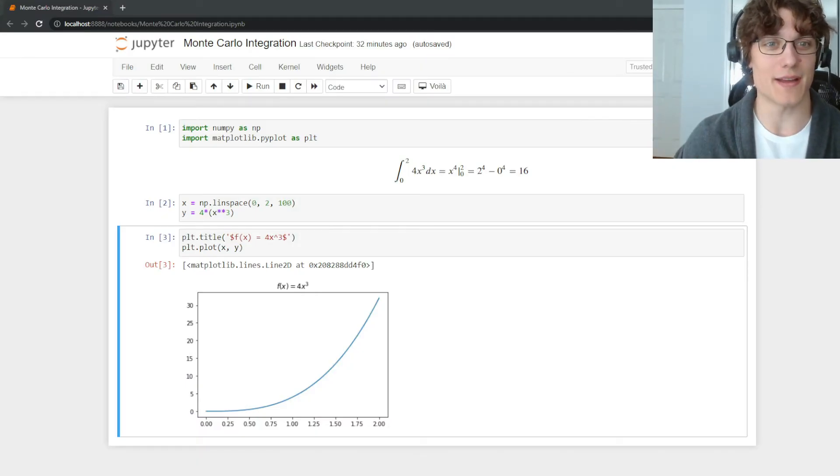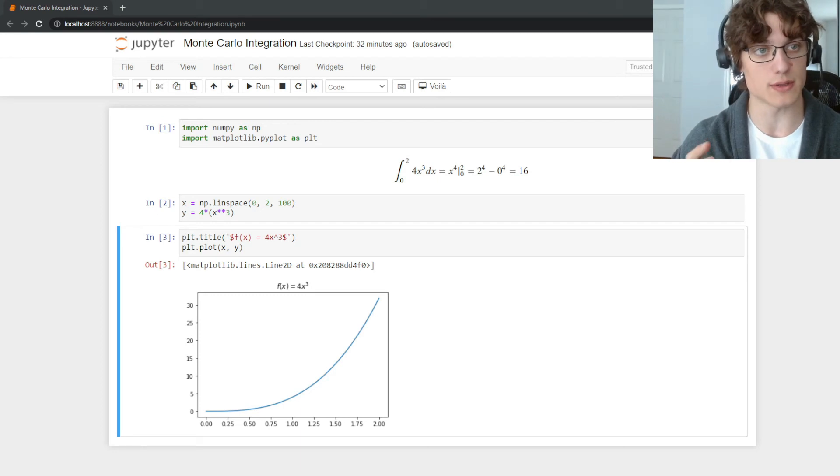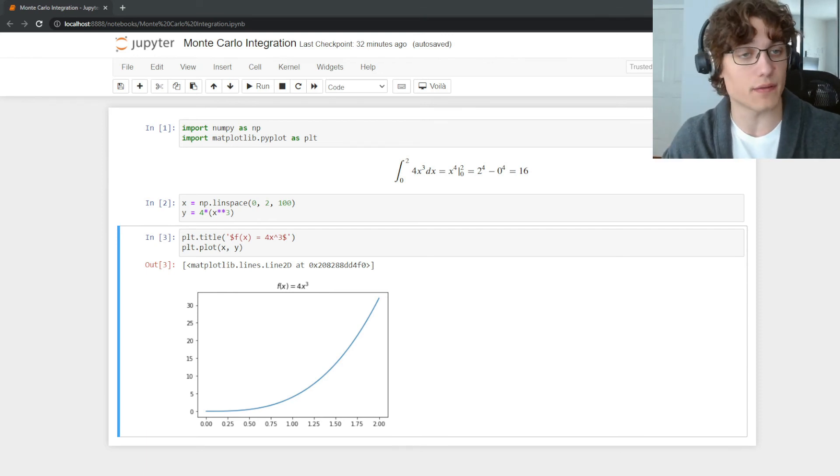All right back in Python. Here I have a definite integral from 0 to 2 of 4x cubed dx. Now there is an analytical solution available to us and that is 16. We're going to use that as our baseline for our Monte Carlo integration to see how we're doing.